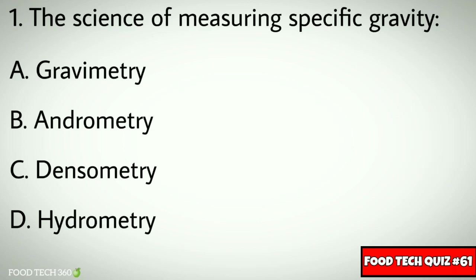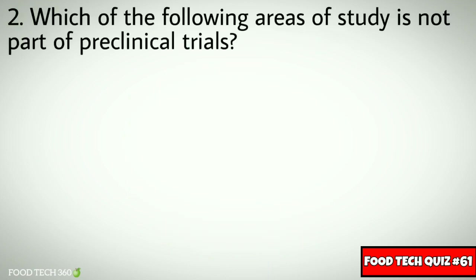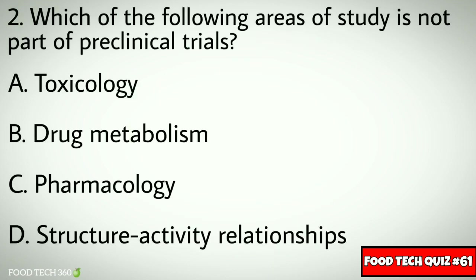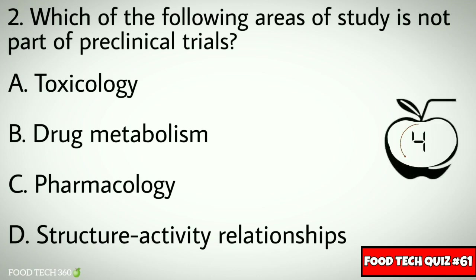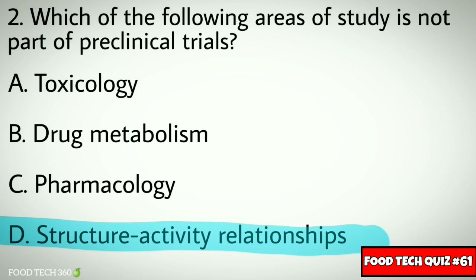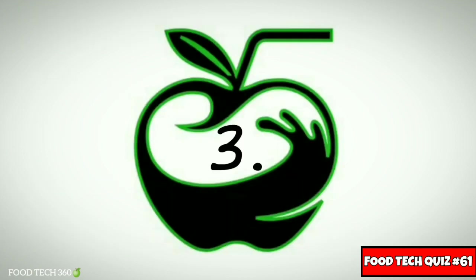Correct answer: d) hydrometry. Question number two: which of the following areas of study is not part of preclinical trials? Options: a) toxicology, b) drug metabolism, c) pharmacology, d) structure activity relationships. Correct answer: d) structure activity relationships.